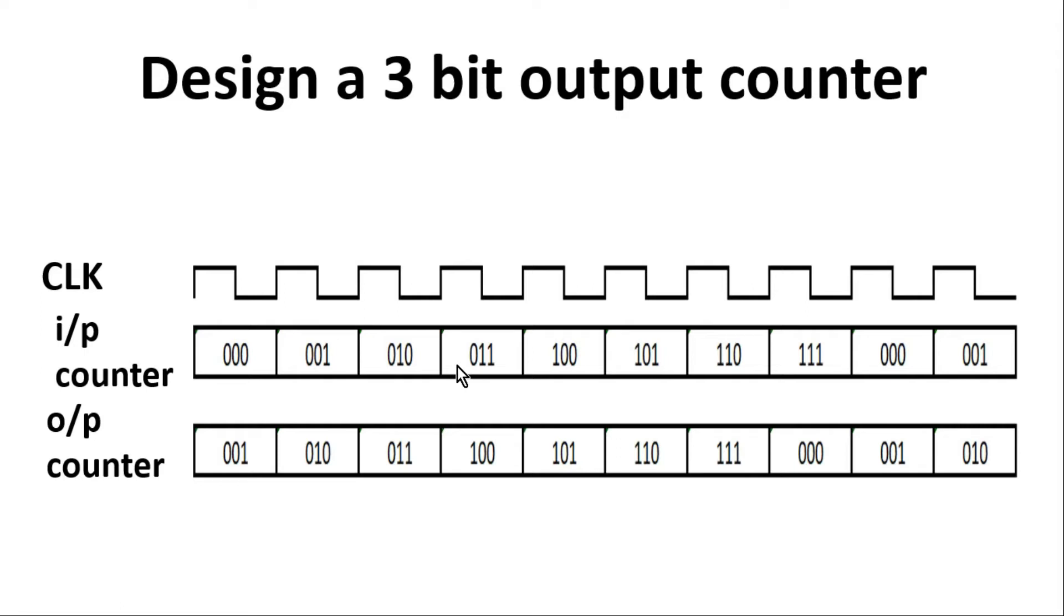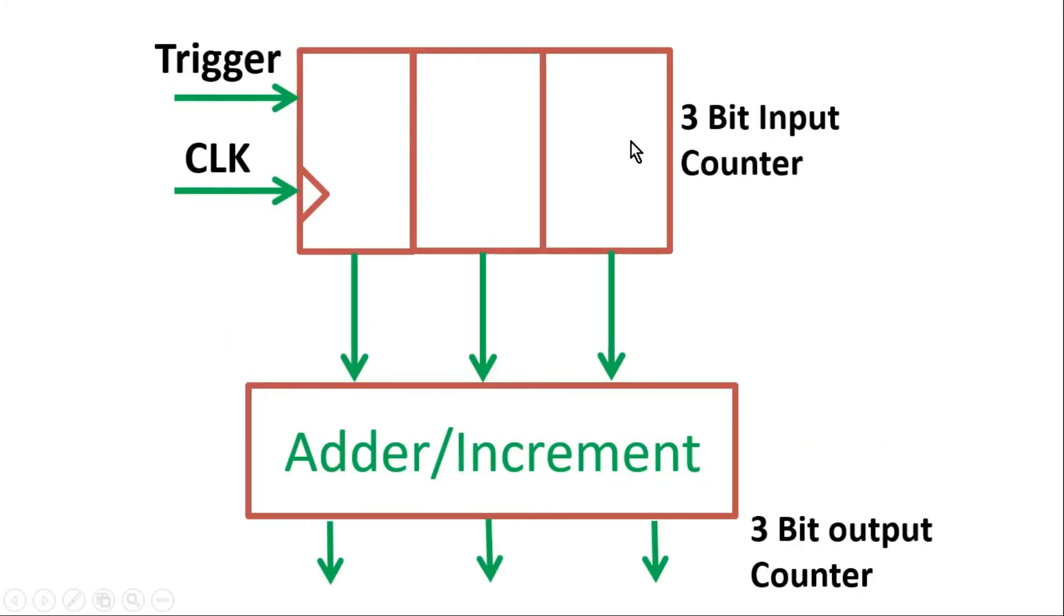Okay, let me reveal its answer. This is the input 3-bit counter. I already told you that it can be a free-running counter, or in this particular case, I have considered this input trigger signal. Whenever there will be a pulse on this trigger signal, it is incrementing its value.